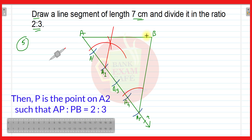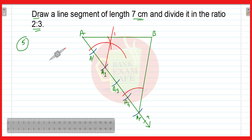This line will meet AB at one point — let that point be P. So AP and PB are the two parts of line segment AB which are in the ratio 2 is to 3. This is the way you can divide a given line segment in the ratio 2 is to 3, or 3 is to 2, or 5 is to 2, and likewise.